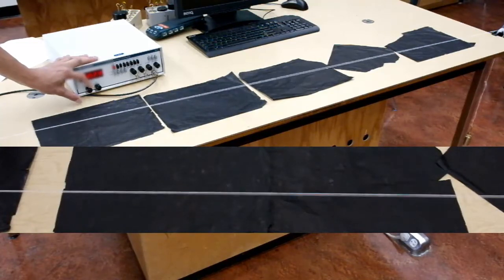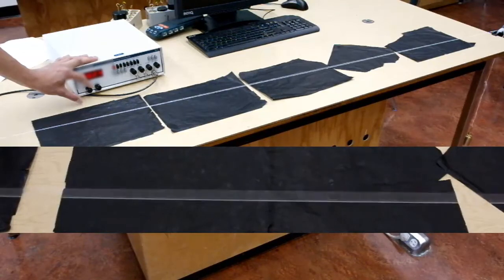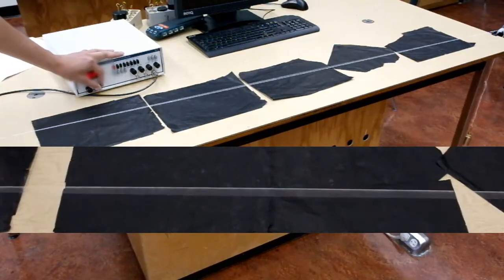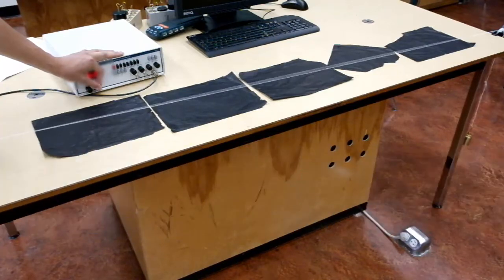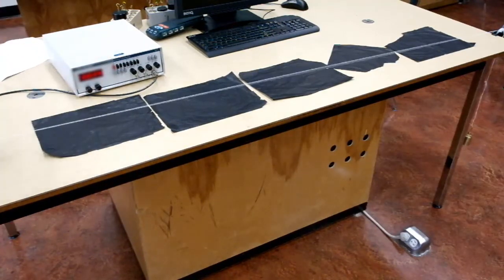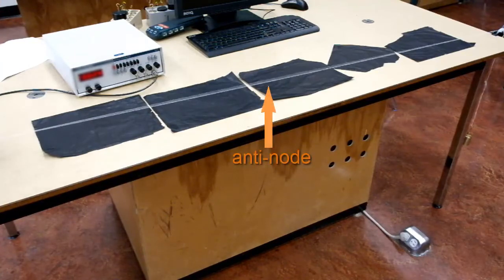And once you pass it, then it gets lower again. So it really likes to vibrate at a certain specific frequency. And we can use the fine adjust to make it the absolute biggest amplitude we can get. And this is our n equals 1 pattern because we have one anti-node in the middle.